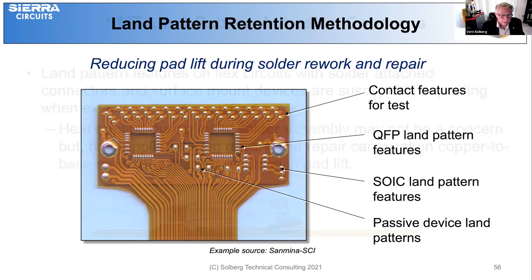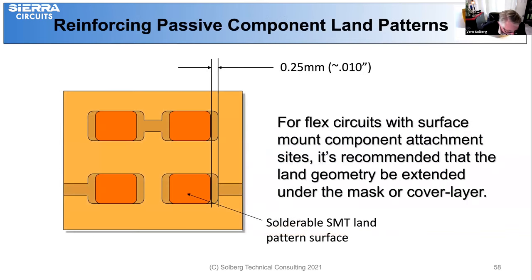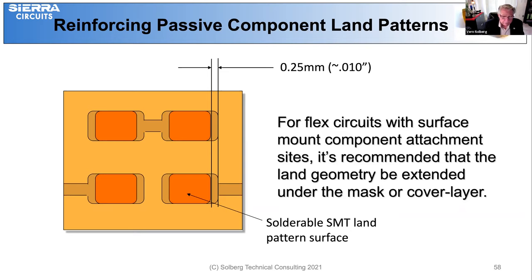A process that proves successful in minimizing copper foil separation when exposed to high temperatures is extending the land pattern geometry to enable thin polyamide film cover layer material to overlap the land pattern features. Cover layer film enables containment of the solder during SMT reflow and provides adhesion reinforcement to the land pattern connecting the conductor pattern. To minimize the potential for pad lift during repair, SMT land pattern geometry should extend at least 0.25 mm underneath the cover layer material, and that way it doesn't have the tendency to lift during heating.